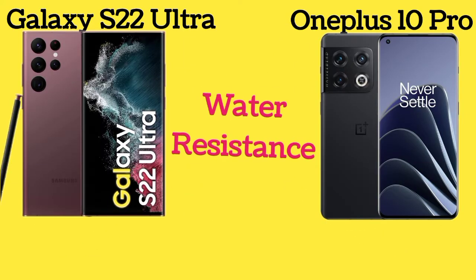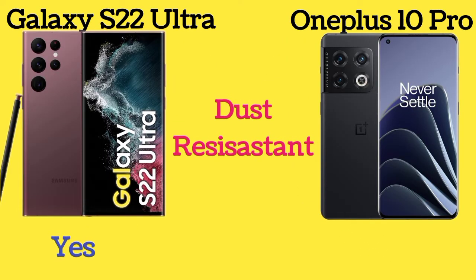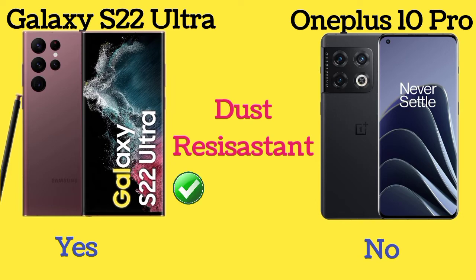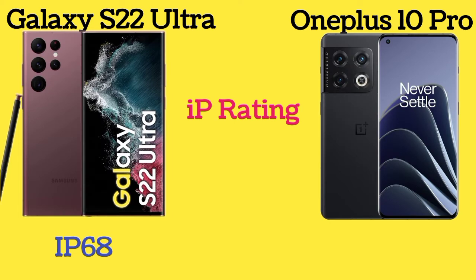The Galaxy S22 Ultra is water resistant and dust resistant, but the OnePlus 10 Pro is not. The Galaxy S22 Ultra has an IP68 rating.